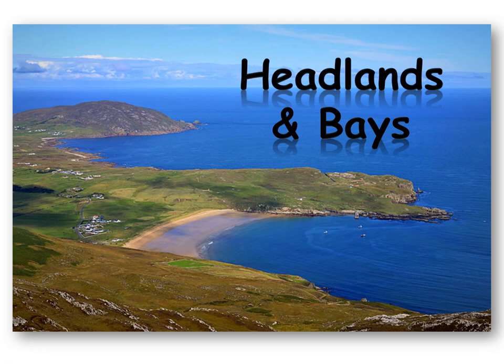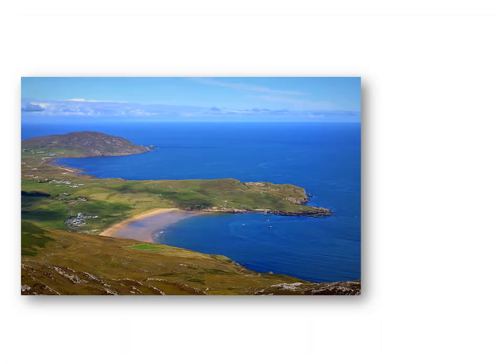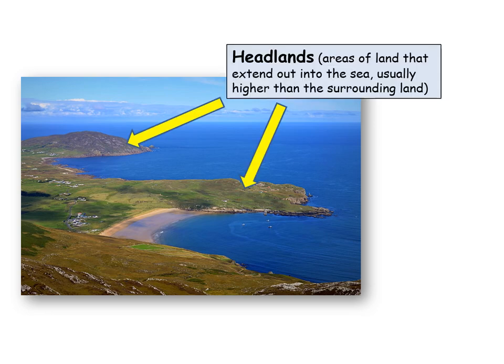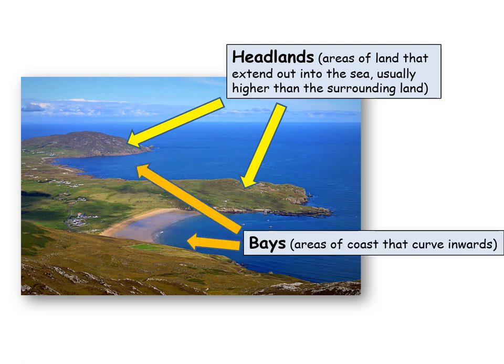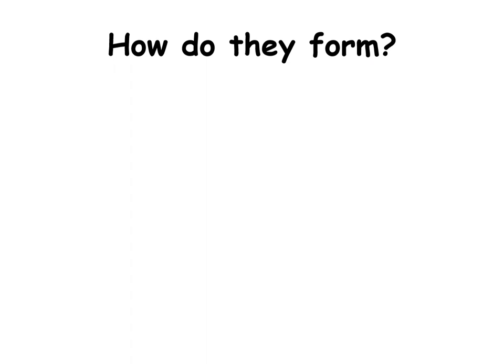Today we're looking at headlands and bays — what are they and how do they form? If you look at this image, it's got pieces of rock sticking out into the sea, and places where the coastline curves inwards. Headlands are those areas of rock that extend out into the sea, and bays are the areas of coast that curve inwards.